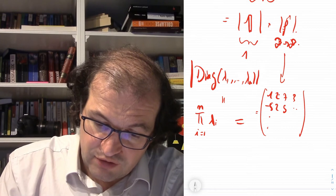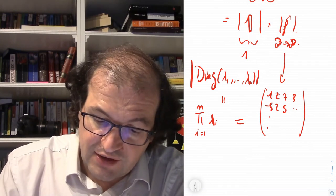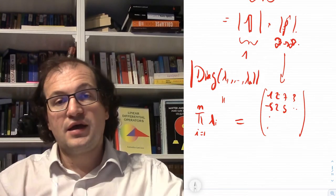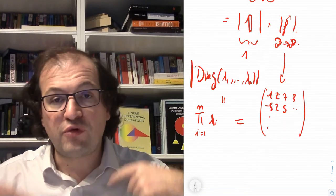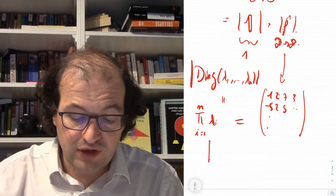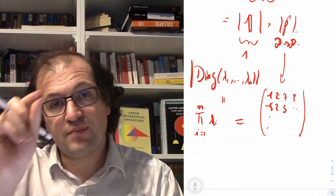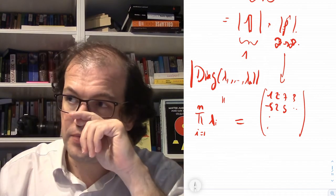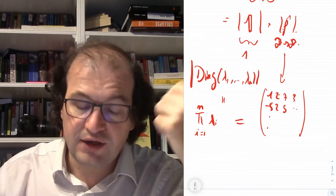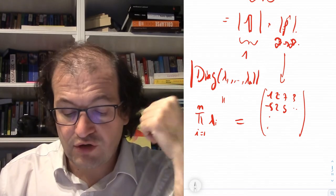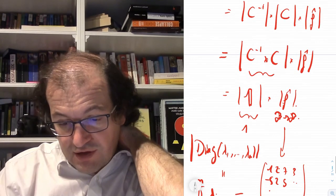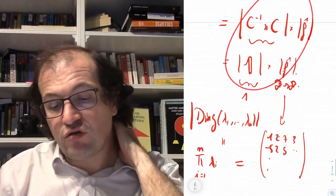This gives the big result: the determinant of any matrix equals the product of its eigenvalues. To compute it, we diagonalize the matrix and multiply the eigenvalues — far simpler than computing all n! permutations. The trace is also invariant under change of basis, but that's left as an exercise.